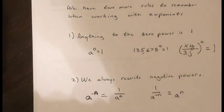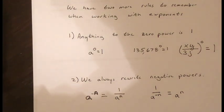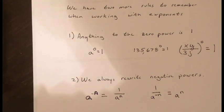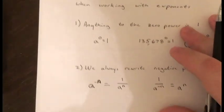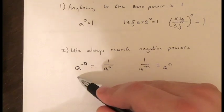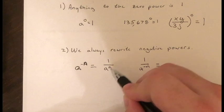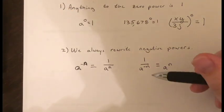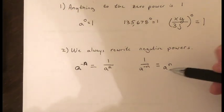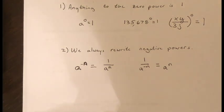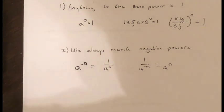Anything raised to the power of zero will always be one — pretty simple. The next rule is also simple, but it's probably the most forgotten because it's counterintuitive. Any number raised to a negative exponent can be rewritten as one over a to the n power, and one over a to the negative n power can be rewritten as a to the n power.